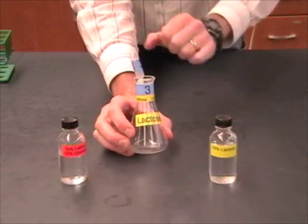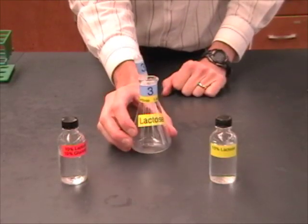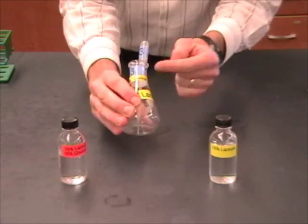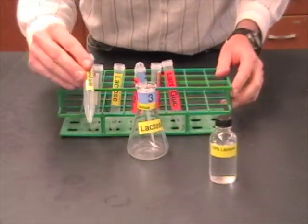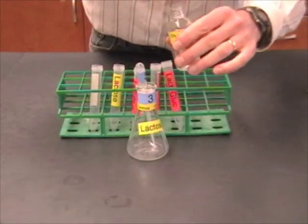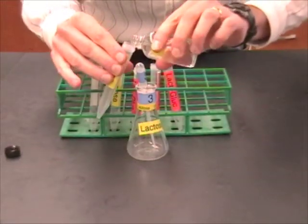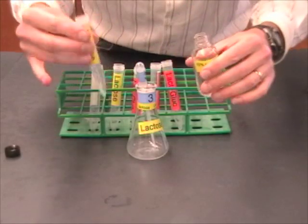But remember, every student is going to have one flask that they're responsible for. Well, I can see that I need to add lactose to my flask. So I'm going to get one of these color coded tubes, and I'm going to measure out three milliliters of lactose.